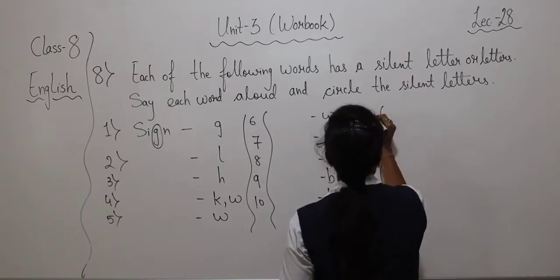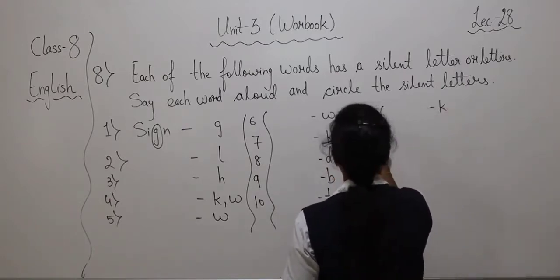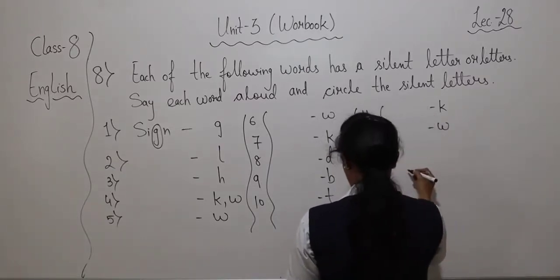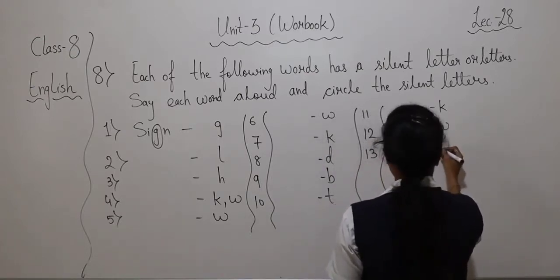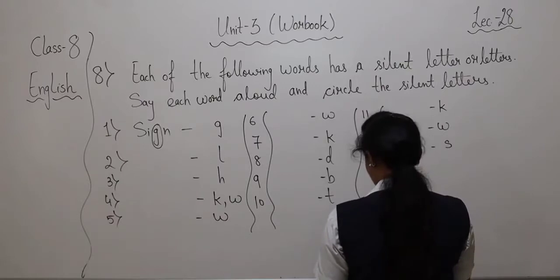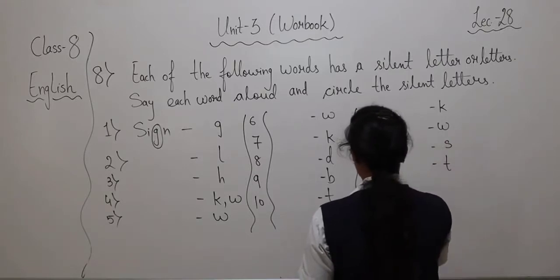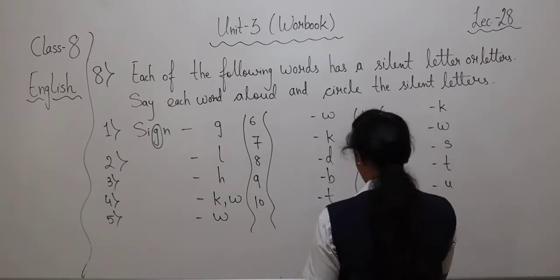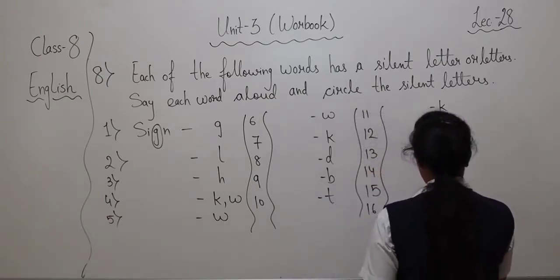Number 11 — knock — K, then wrong — W. Island — S. Switch — T. Colour — U. Then honest — H.